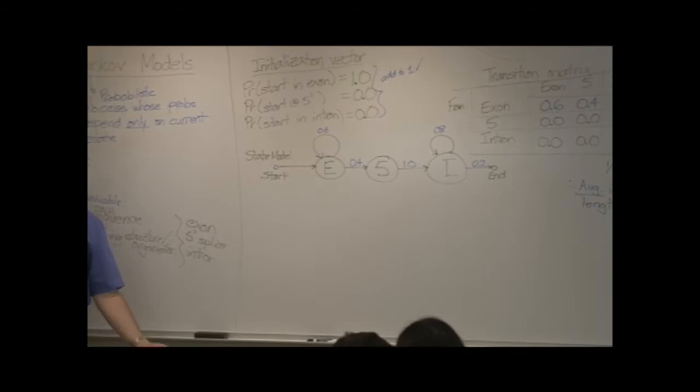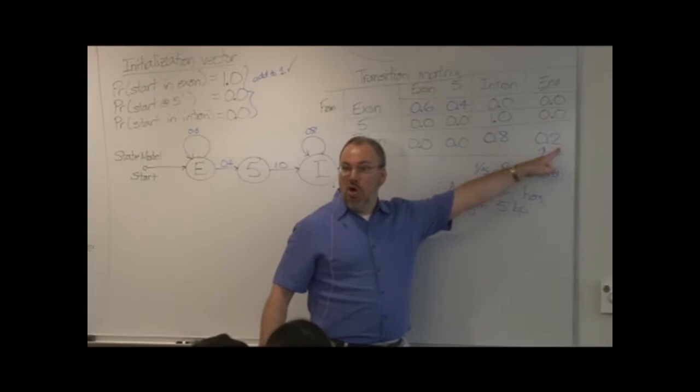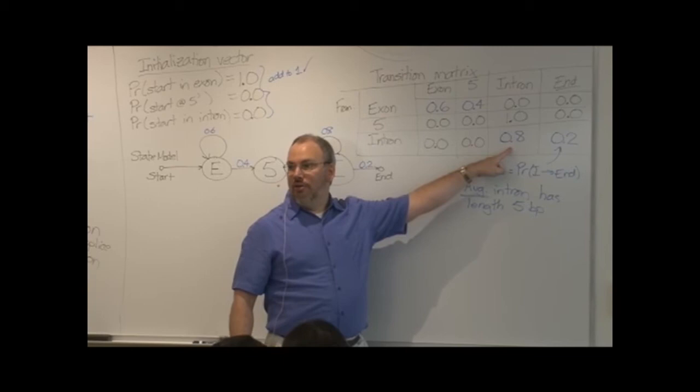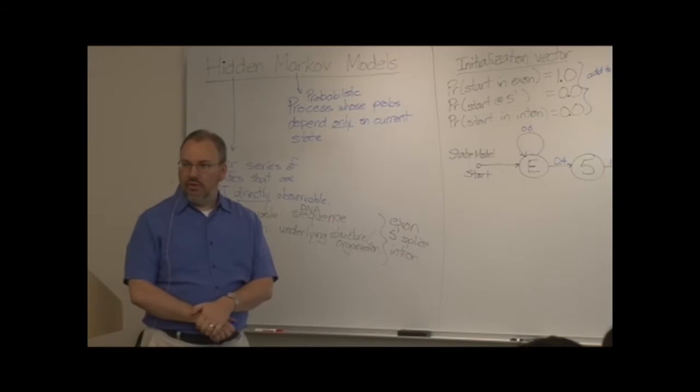In reality, of course, introns are generally much longer than five base pairs, which means this number is going to be very, very small, and correspondingly, this is going to be a large number, almost one. Maybe 0.999. Yes, sir?